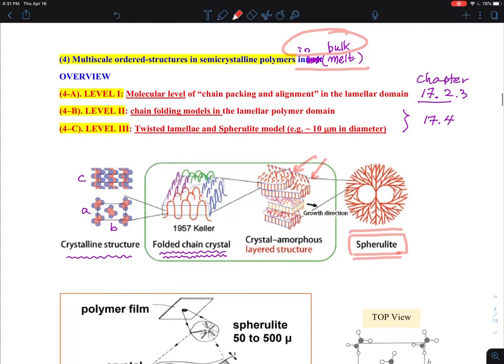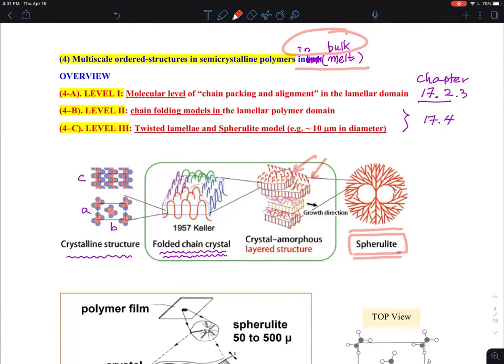Before I go into the details, the molecular level of understanding, we are talking about some angstroms, a few angstroms, let's say five angstroms scale. The lamellar thicknesses, we are talking about 100 angstroms, 10 nanometers. So it's very, very thin layers.